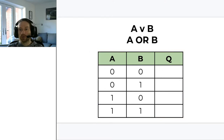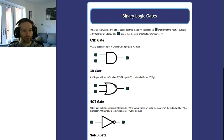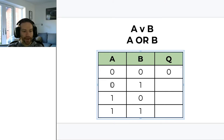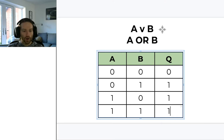The next one is OR. The OR gate will only output 0 if both inputs are off. Going through the truth table: if A is 0 and B is 0 the output is 0. If A is 0 and B is 1 — one of them is on — the output is 1. If A is 1 and B is 0 — one is on — the output is 1. And if A is 1 and B is 1, remember this is an OR gate, so the output is 1.